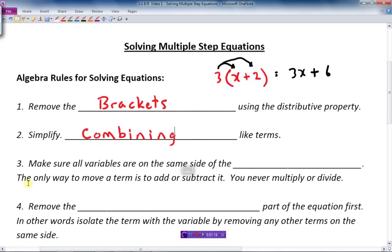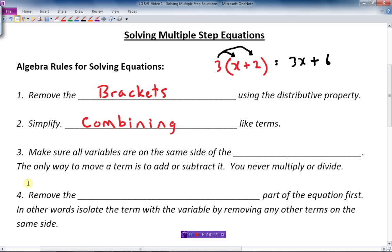Number three, make sure all variables are on the same side of the equal sign. So if you've got x's on both sides of the equal sign, we'll make sure they're on the same side of the equal sign. Generally speaking, we move them all to the left-hand side.